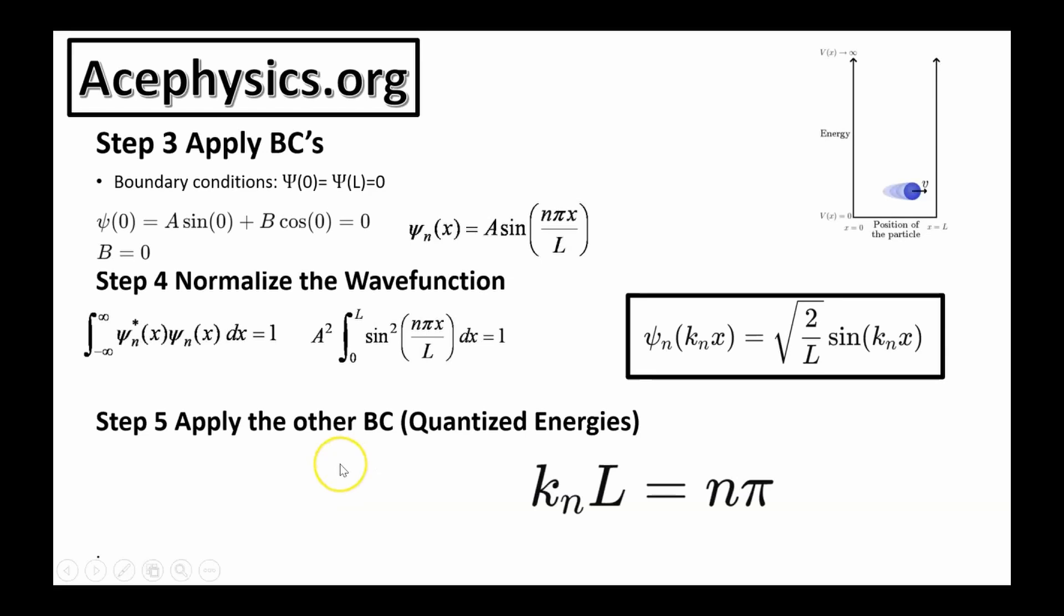Step five is applying the other boundary condition. The other boundary condition is psi of L is equal to zero. If I plug L in for X, that gives me this equation, and the only way that this equation works is if the argument of the sine function is equal to N times pi. We have KN times L is equal to N times pi, and this is how you apply the other boundary condition. This might feel a little confusing at first, but you should get used to this sort of analysis because this is done in every single quantum mechanics problem.